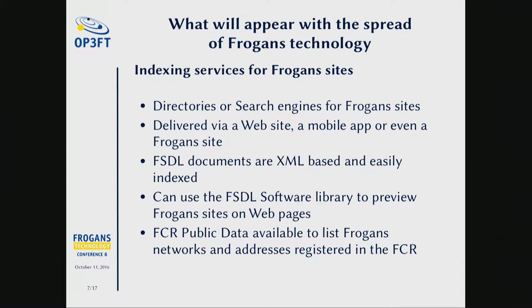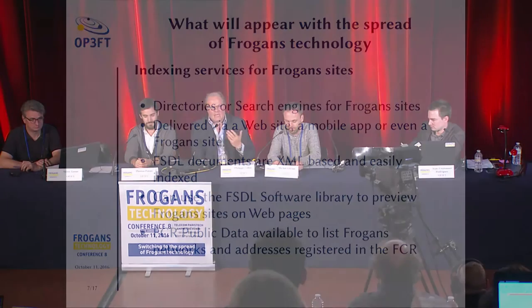How do you find Forgance sites? We will see the emergence of search engines. Today, indexing Forgance sites is extremely simple — Forgance sites are a set of XML files. There are no tags in the web sense, but it's easier to index a Forgance site than a mobile application. We could imagine indexing services or tools for searching Forgance sites that could look across websites, mobile applications, and Forgance sites, quite simply because Forgance sites are identified by scanning the XML file.